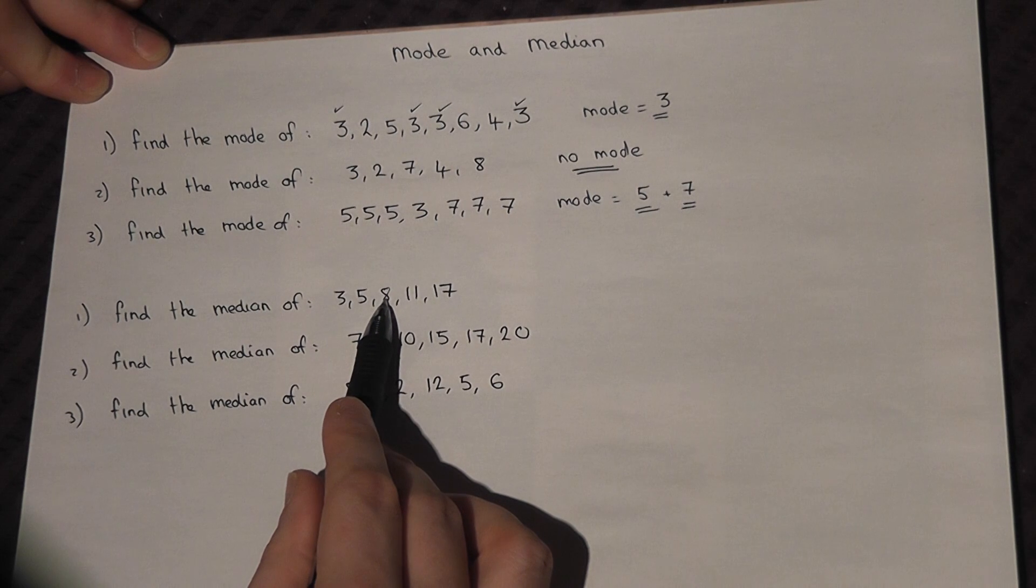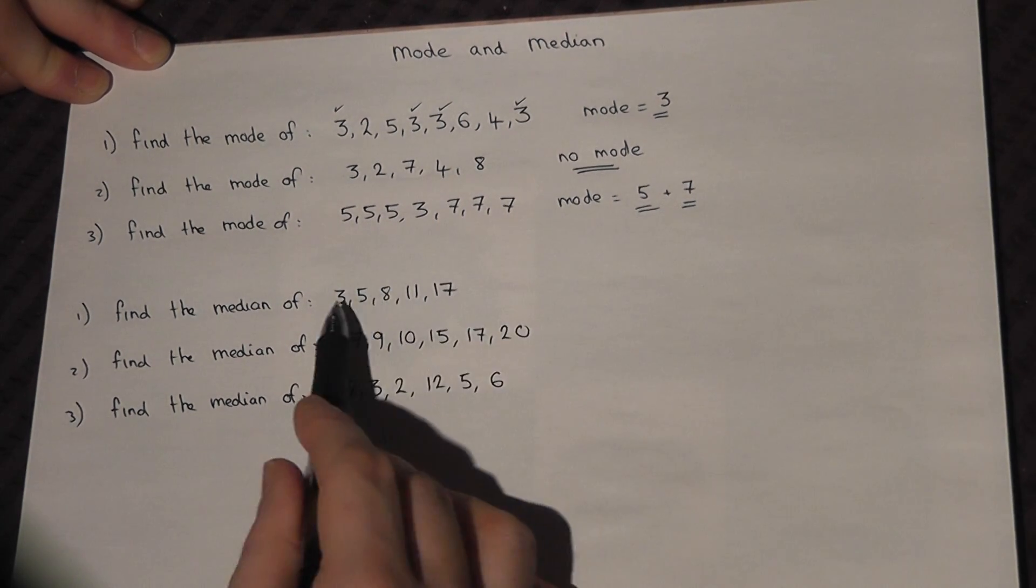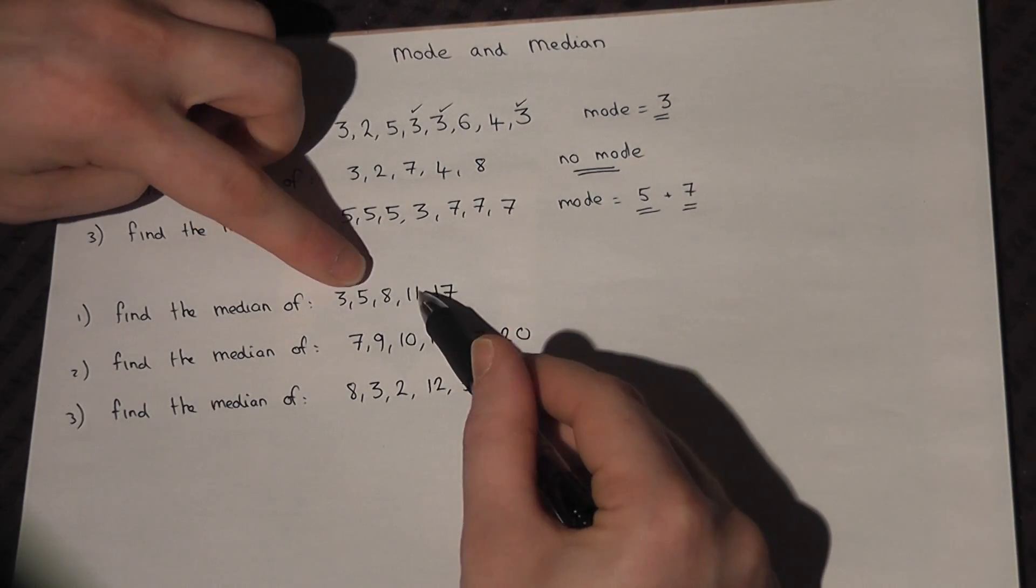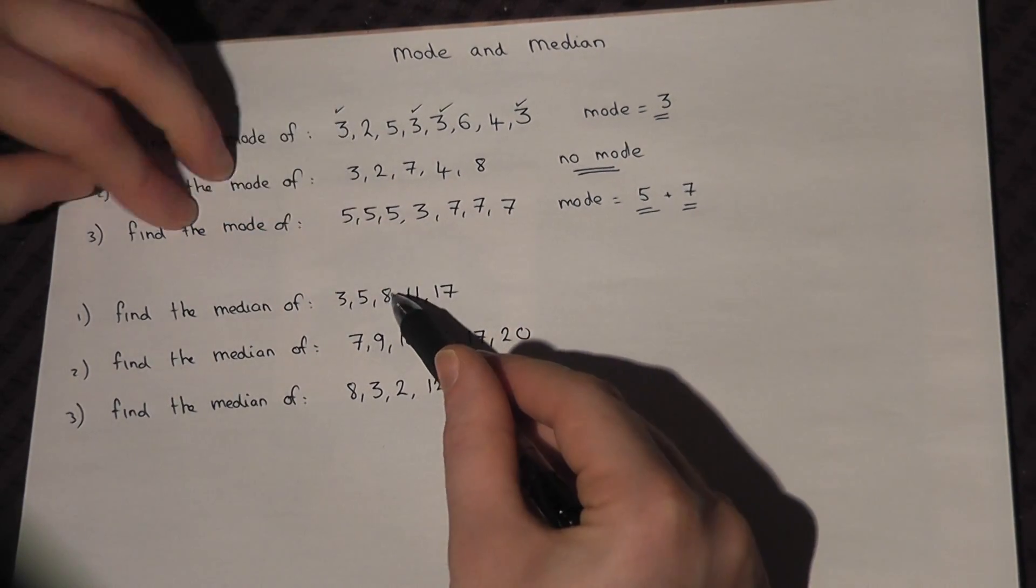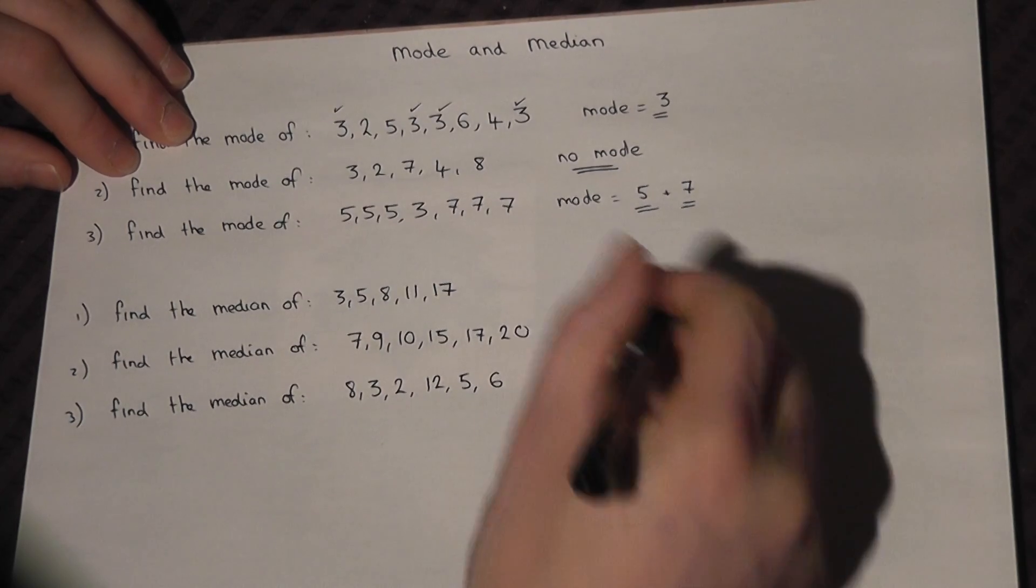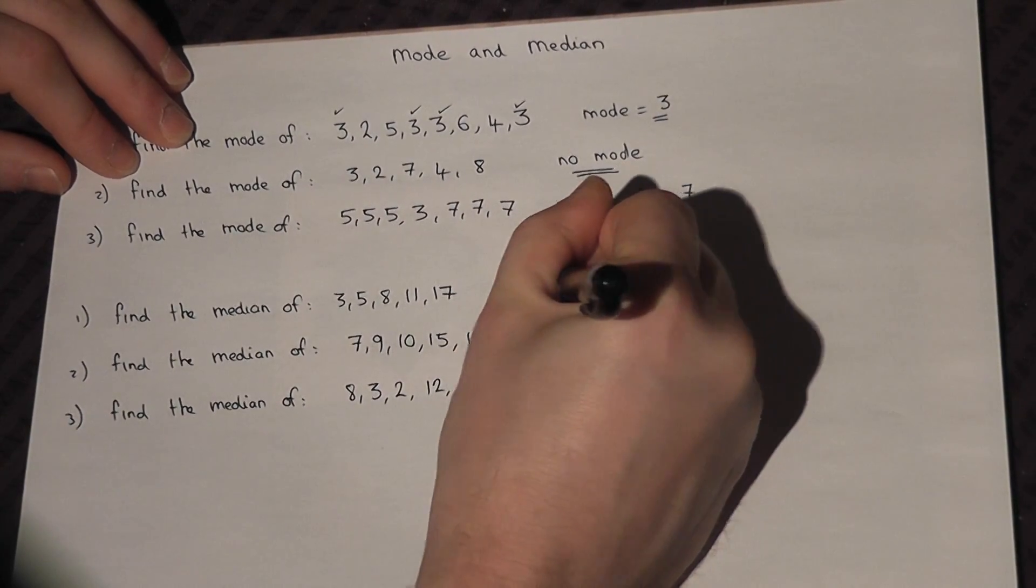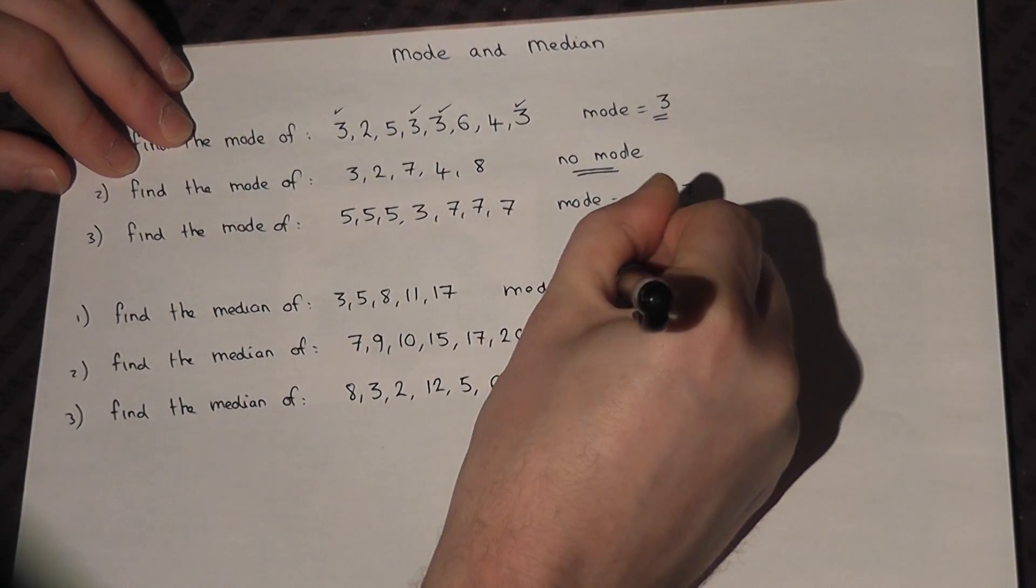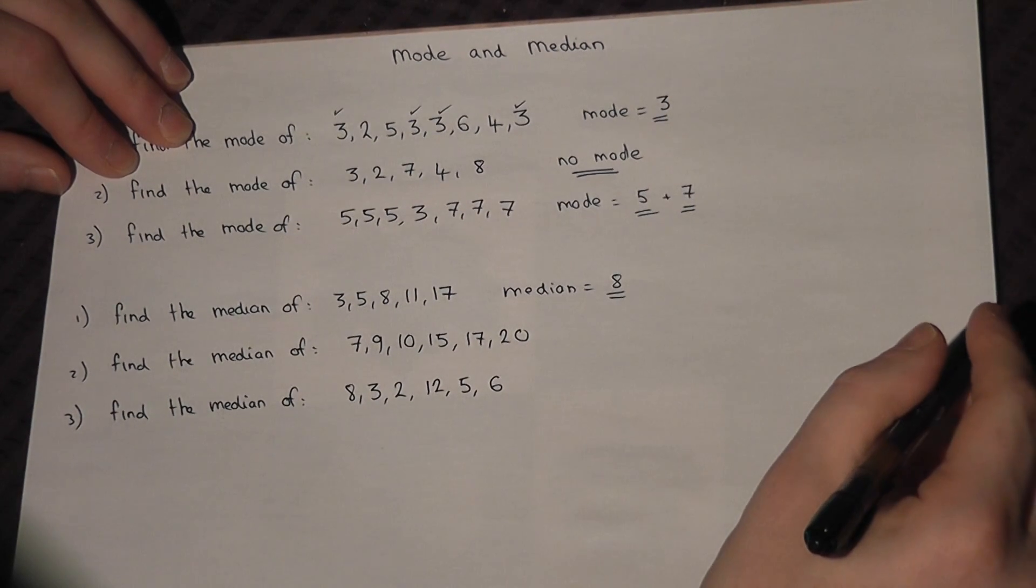And the number in the middle is 8. Sometimes it's easy when you've got lots of numbers to count in from the outside until you find the centre number. But the median in this case is equal to 8, the central number.